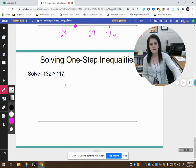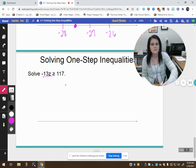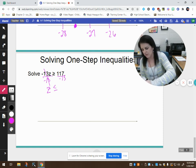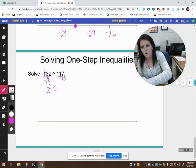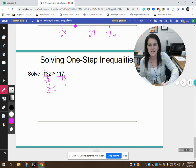And the last one. Again, this time it's negative 13 times z. To undo the multiplication we divide. A negative 13 divided by a negative 13 leaves me with positive 1. Positive 1 times z is z, changing the direction of that inequality symbol because I divided both sides by a negative. So 117 divided by negative 13 is negative 9.